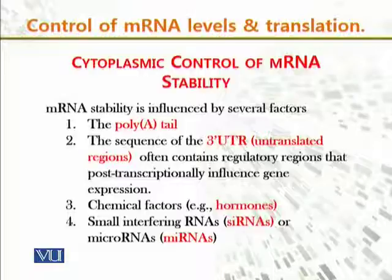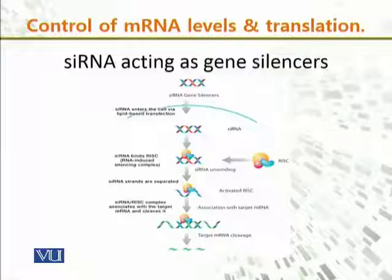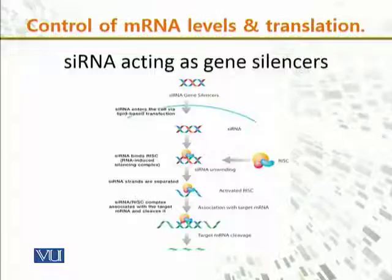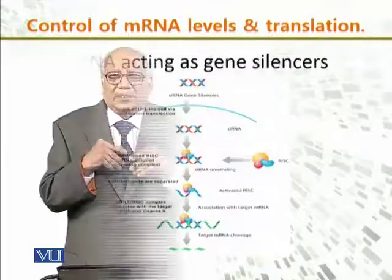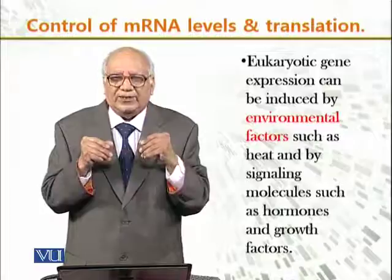Chemical factors such as hormones, enzymes, and small interfering RNAs — abbreviated as siRNAs — or microRNAs are factors that control cytoplasmic messenger RNA stability. The mechanism of small interfering RNA acting as a gene silencer is depicted in this picture, where small RNAs act as silencers and interact with different components, eventually affecting the translational mechanism of the cell.